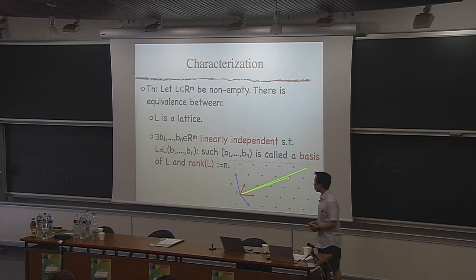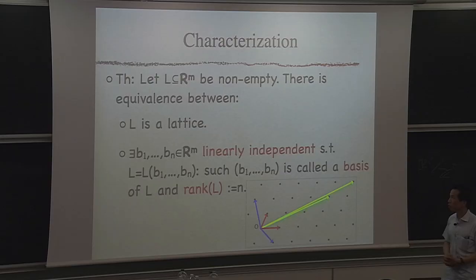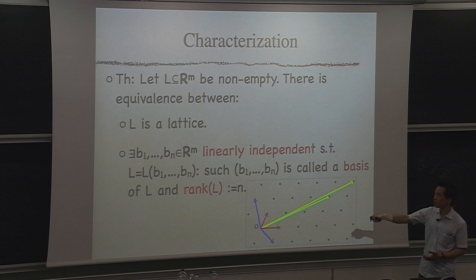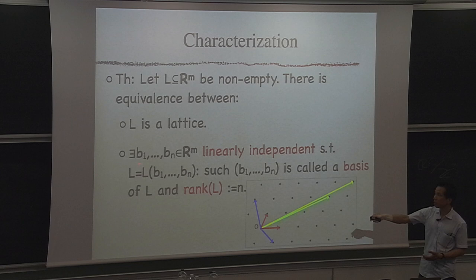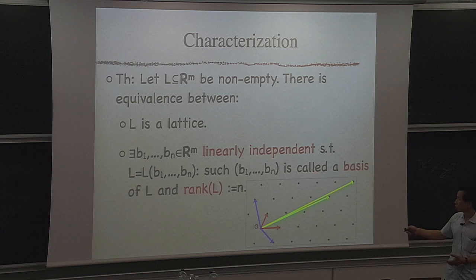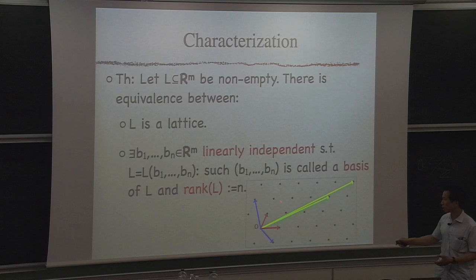There's a characterization: L is a lattice if and only if there exist linearly independent vectors such that the lattice is the set of all linear combinations of those vectors with integer coefficients. I call such a set of vectors a basis of the lattice, and the rank is exactly the number of basis elements. Bases are not unique — you can take green, red, or blue vectors and get exactly the same lattice from their integer linear combinations.